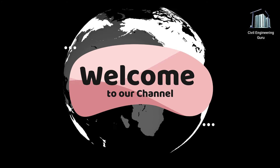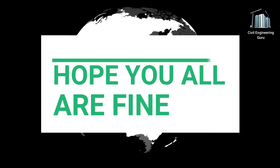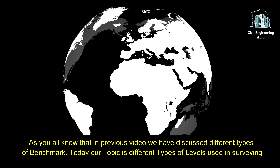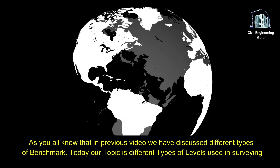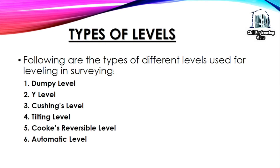Welcome to our channel Civil Engineering Guru. In a previous video we discussed different types of benchmarks. Today our topic is different types of levels used in surveying. The types used for leveling and surveying are: dumpy level, Y-level, Cushing's level, tilting level, Cook's reversible level, and automatic level.